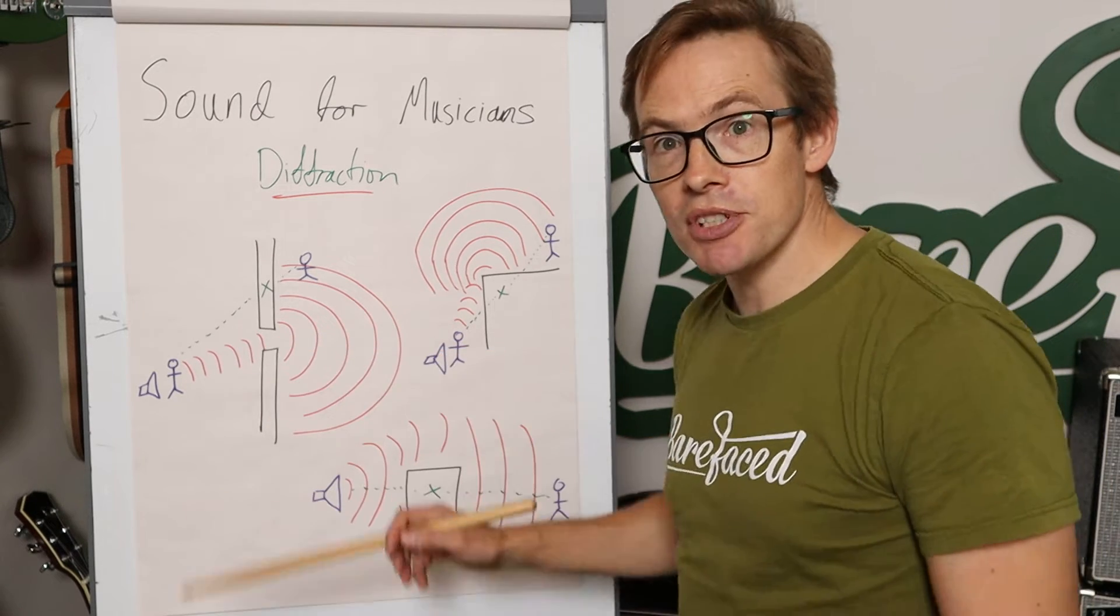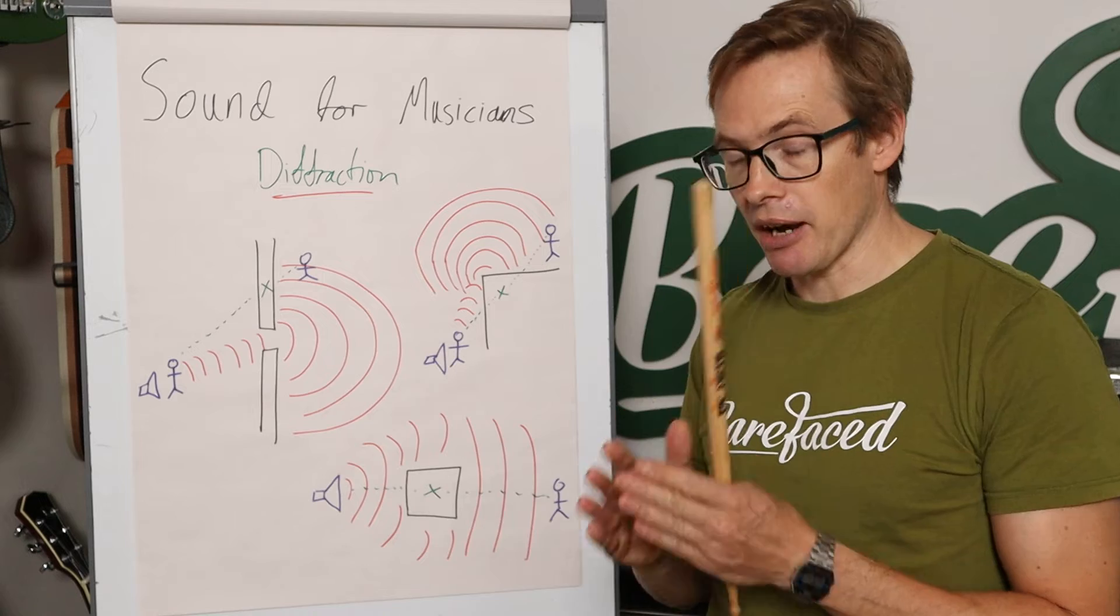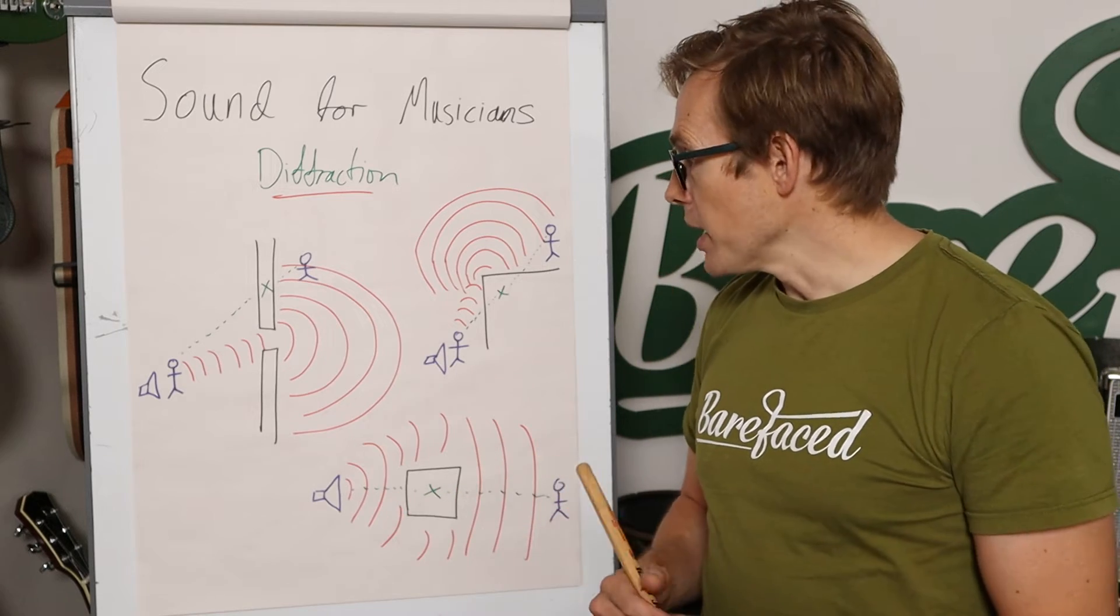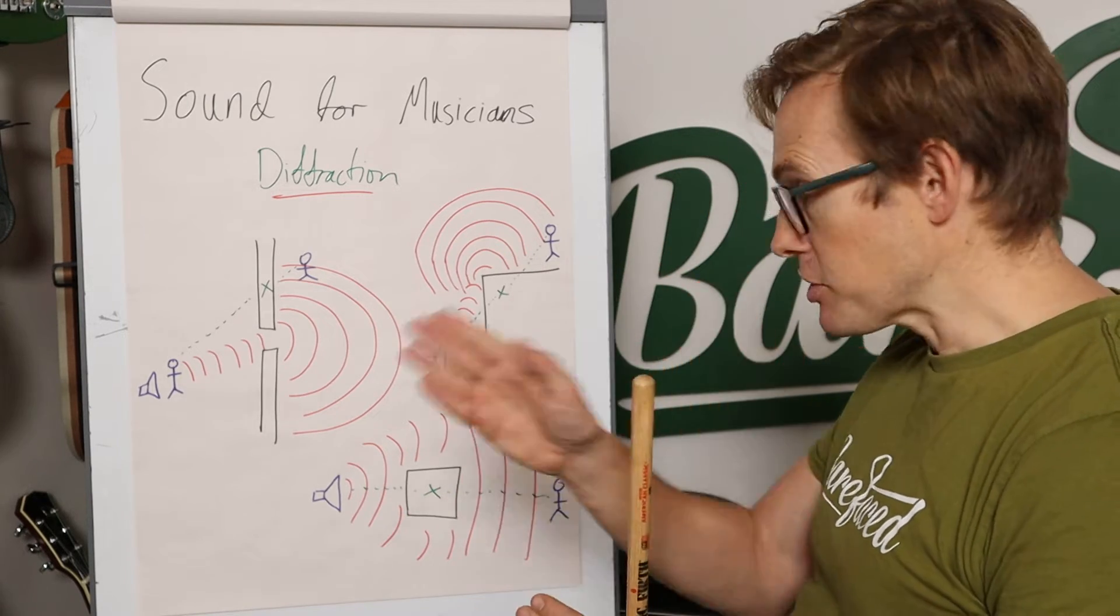You can do this with light. Some of you may remember doing this in science lessons. If you have a narrow enough slit, so it's narrow relative to a light wave, the slit will actually cause the light to diffract sideways, it won't just go through the gap.